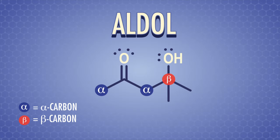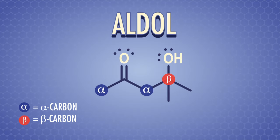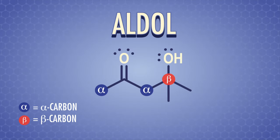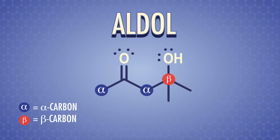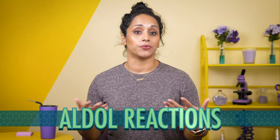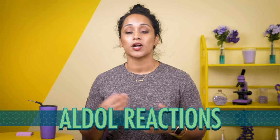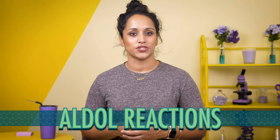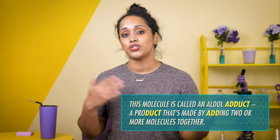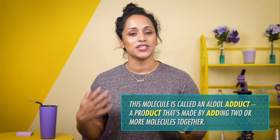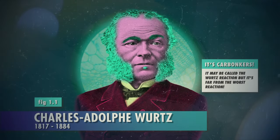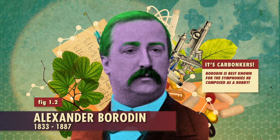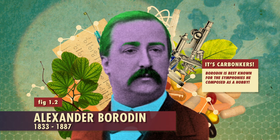An aldol is a ketone or aldehyde with a beta-hydroxy group. In other words, it's a molecule with a carbonyl functional group a couple of carbons away from an alcohol group. Aldols are the product of aldol reactions, which are another way of forming carbon-carbon bonds in organic chemistry. Essentially, we combine two simpler carbonyl compounds into a bigger molecule. This reaction was discovered independently by the French chemist Charles-Adolphe Wirtz and the Russian chemist and composer Alexander Borodin in the late 1800s.